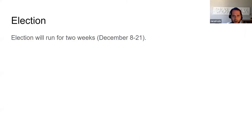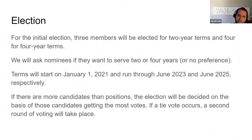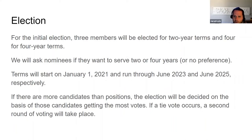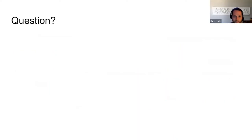The election will be for two weeks. We'll take all of the nominees and use the same voting mechanism we've used in the past through Qualtrics. All designated member representatives with voting rights shall elect up to seven members of the board during that two-week period — December 8th through the 21st. For the initial election, three members will be elected for two-year terms and four for four-year terms, so we will ask nominees if they want to serve two or four year terms or have no preference. Terms will start on January 1st, 2021 and run through either June 2023 or June 2025. If there are more candidates than positions, the election will be decided by those candidates getting the most votes, and if there is a tie vote, a second round of voting will take place.